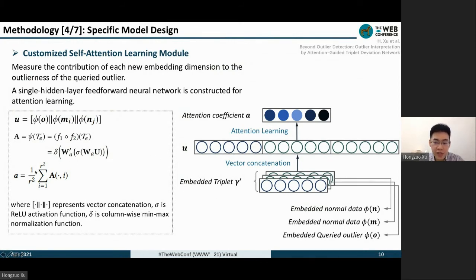Then the attention matrix is obtained by the single hidden layer network. Finally, the attention coefficient for each embedding dimension is the average of the columns of matrix A.